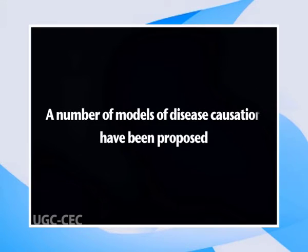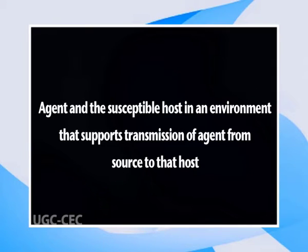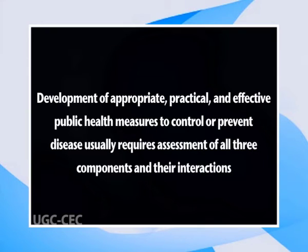A number of models of disease causation have been proposed. Among the simplest is the epidemiologic triad or triangle, the traditional model for infectious disease. The triad consists of an external agent, a susceptible host, and an environment that brings the host and agent together. Disease results from the interaction between the agent and the susceptible host in an environment that supports transmission of the agent from a source to that host. Two ways of depicting this model are shown in the figure, where agent, host, and environmental factors interrelate in a variety of complex ways to produce disease.